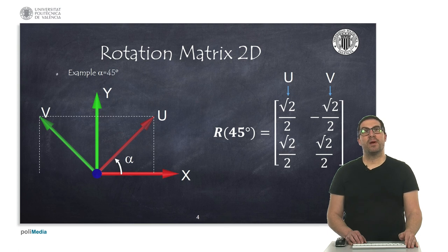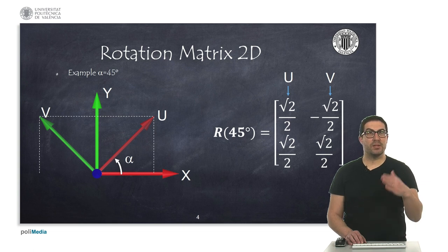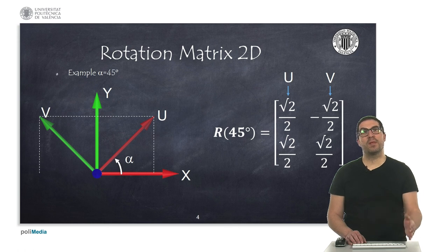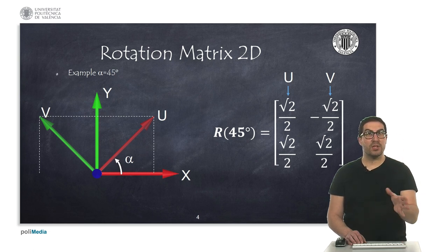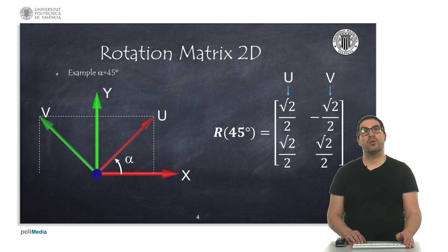This is an example of a rotation of 45 degrees. This implies that we rotate the x-axis by 45 degrees to get u, and we rotate the y-axis by another 45 degrees to obtain v. As a result, we obtain the numerical matrix shown here. The first column corresponds to the coordinates of the u vector once rotated, and the second column corresponds to the coordinates of the v vector.